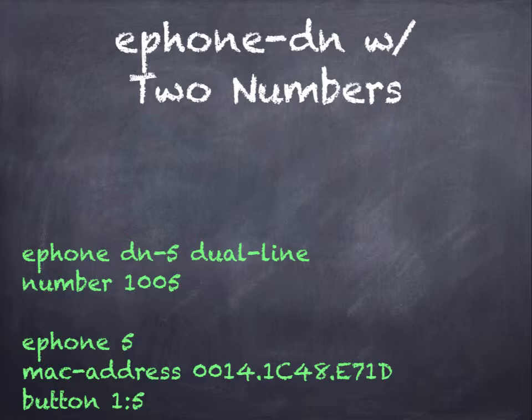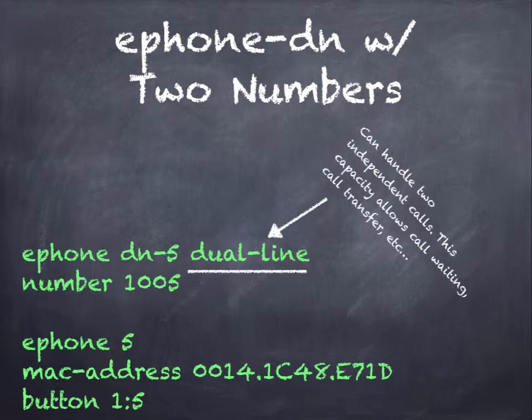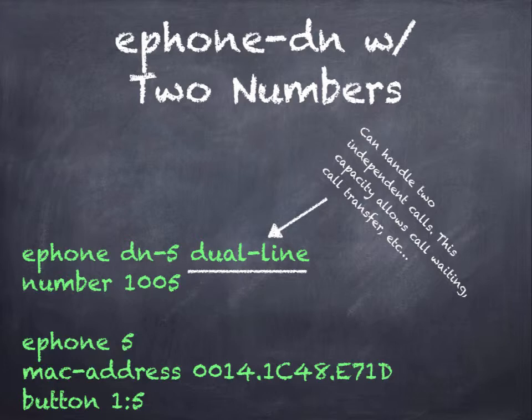There is also the dual-line command, which is different from having two physical numbers on one line. The dual-line command allows one line to accept multiple calls at one time. This is necessary if you plan to use hold, call waiting, call transfer, or pretty much any advanced call feature. It allows one line to have one call coming in while a second one is going out.